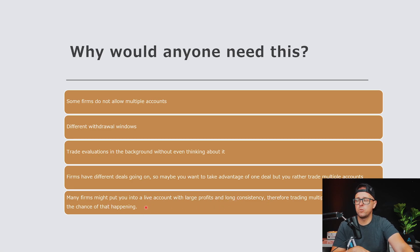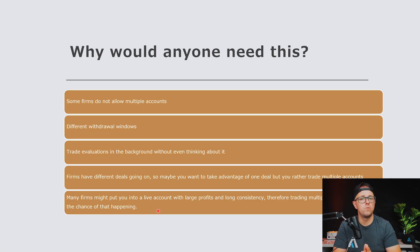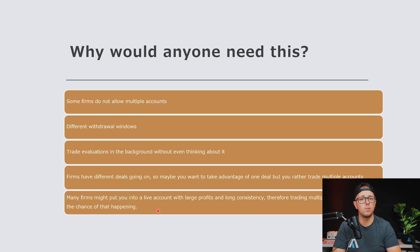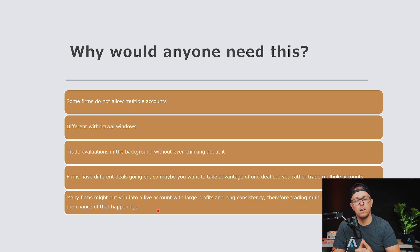The last thing I want to mention — this is not a rumor, I know it happens, but there's no black-and-white rule on it. Once you are very profitable with these firms for a long period of time, they're going to ask you to move to a live account — from the live SIM account to an actual funded account, and you become a professional trader with much higher fees. I don't know if they're going to let you keep 20 accounts. So having multiple firms and spreading your profits across all these firms will probably prolong the life of you being a live SIM trader instead of going into a live funded account.